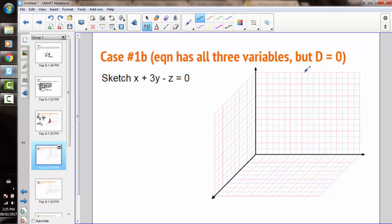In our second case, we're looking at situations when the d value is 0. When this happens, we have all three values, and the d value is 0. The origin is a point on our plane. I'm going to write the origin, which is (0, 0, 0), as a point on our plane.